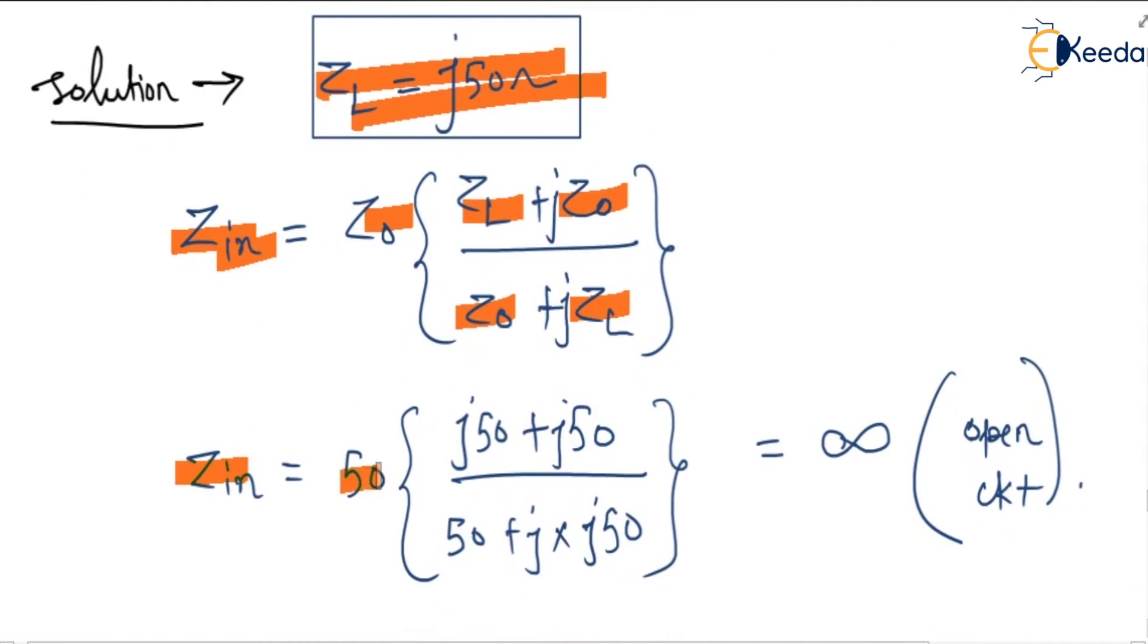So Zin equals 50 times (j50 plus j50) divided by (50 plus j times j50). This answer is coming as infinite, so the transmission line will be seen as open circuit at that point.